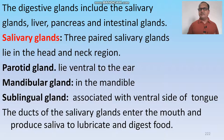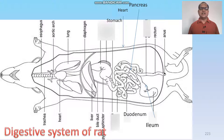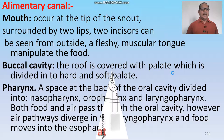The alimentary canal consists of: mouth, buccal cavity, pharynx, oesophagus, stomach, duodenum, ileum, rectum, and anus. The digestive glands include the salivary glands, liver, pancreas, and intestinal glands. Salivary glands are of three types: parotid glands lie ventral to the ear; mandibular glands lie under the mandible or lower jaw; sublingual glands are associated with the ventral side of the tongue. Ducts of the salivary glands open into the mouth and produce saliva to lubricate and digest food. The digestive system starts from the mouth, through the oesophagus, stomach, duodenum, small intestine, large intestine, and rectum, which opens by the anus.